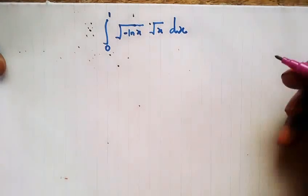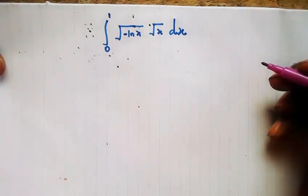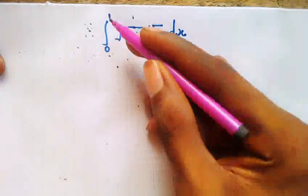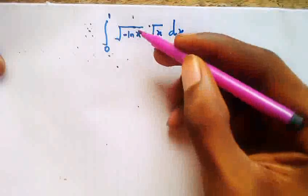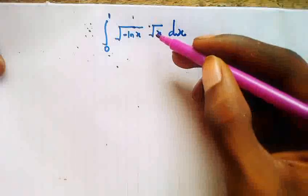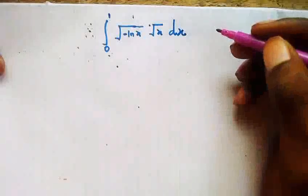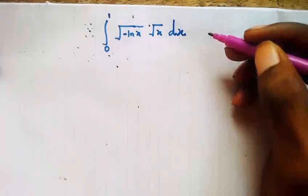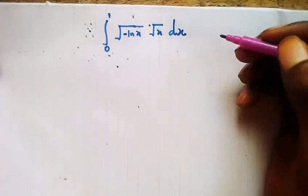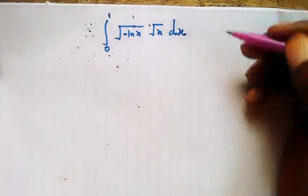Good day everyone, welcome back to my channel. Today we have the following problem: the integral as x goes from 0 to 1 of the square root of negative natural logarithm of x times the square root of x, dx. Today is the third class of this calculus series on the gamma function.